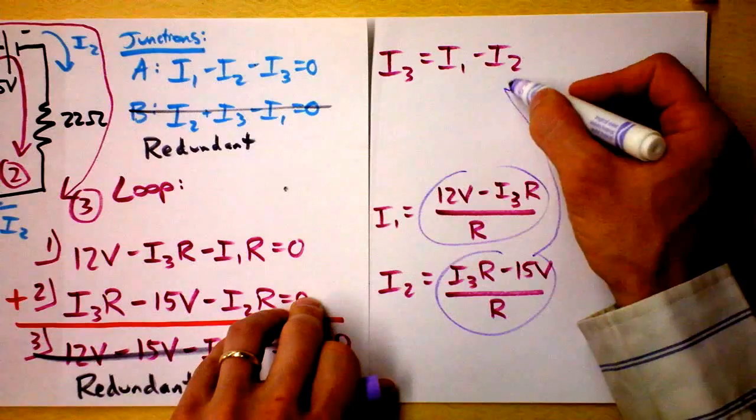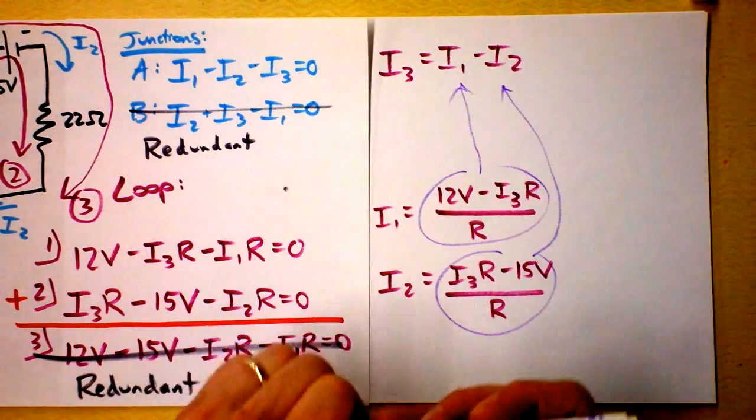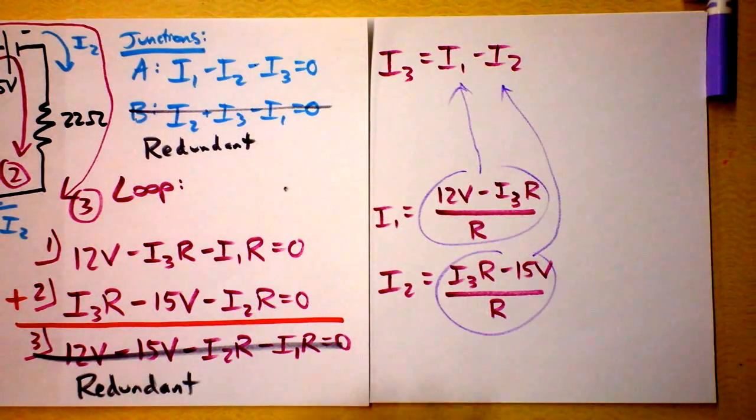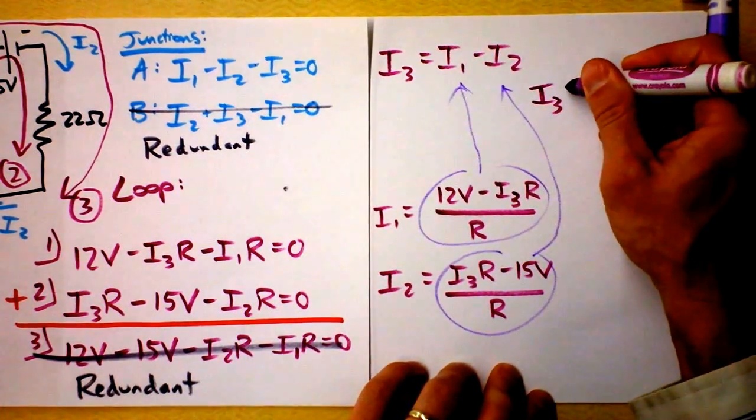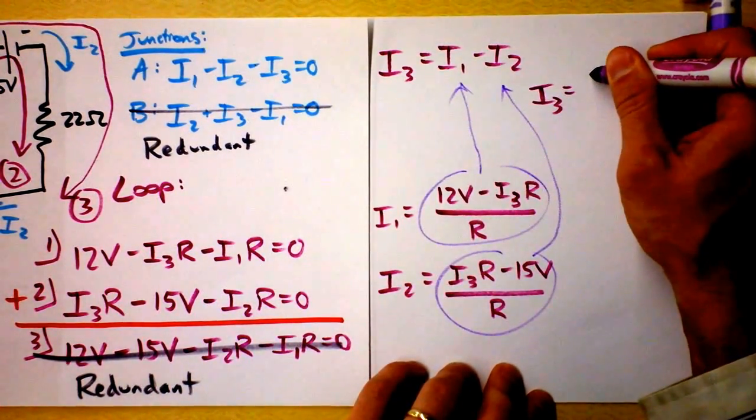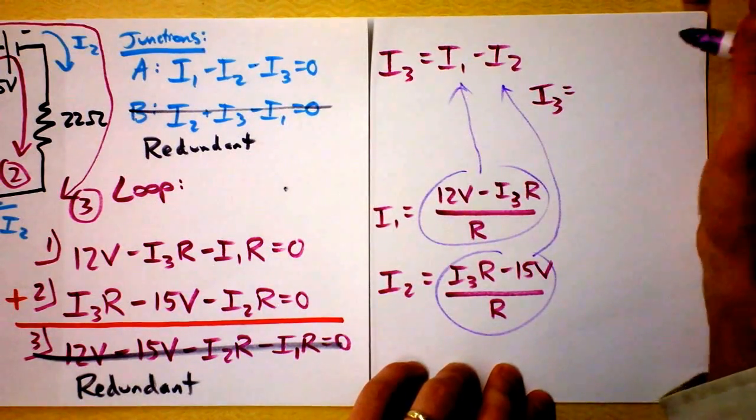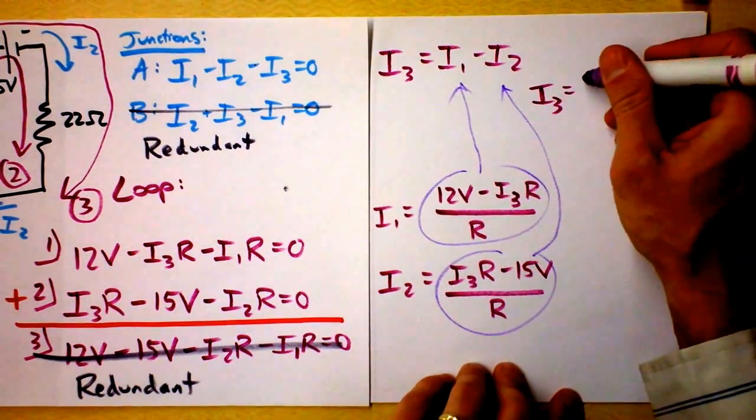Take these guys into there. And you'll see that we actually have an I3 that we can solve on its own. We find I3 equals. Oh, man. Well, the whole thing is divided by R. So that's nice. I'm going to write it like this. How should I write it? Nah.